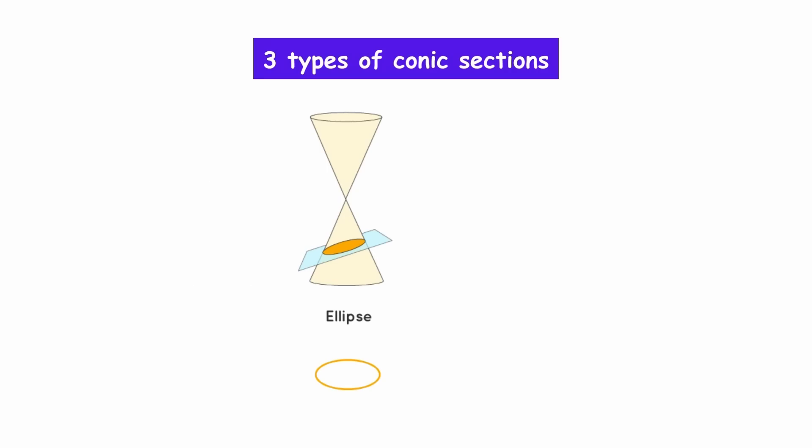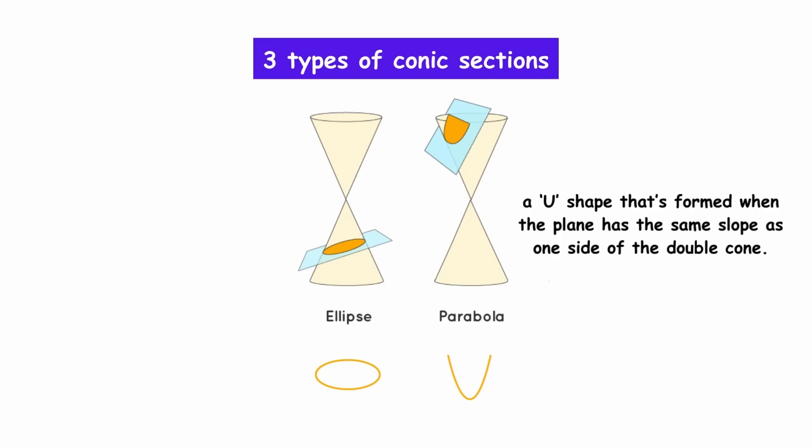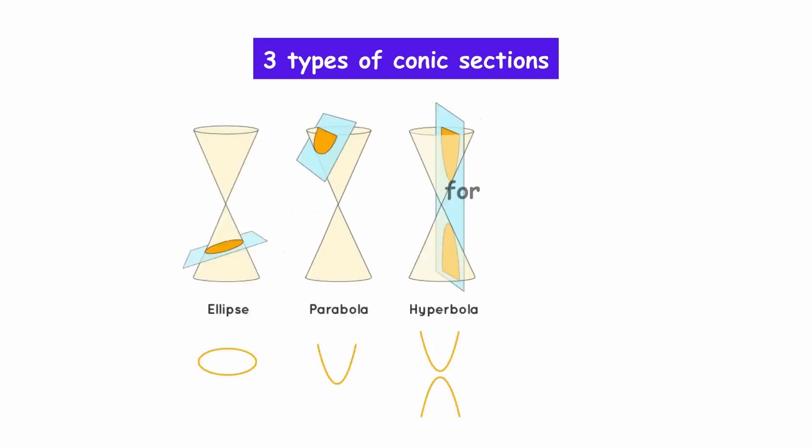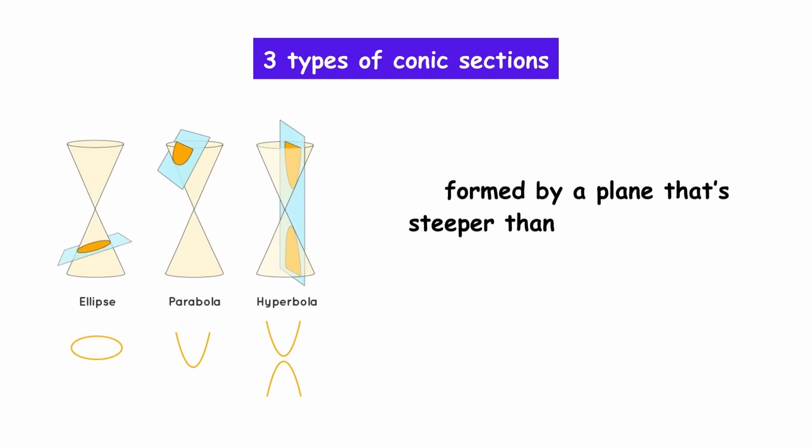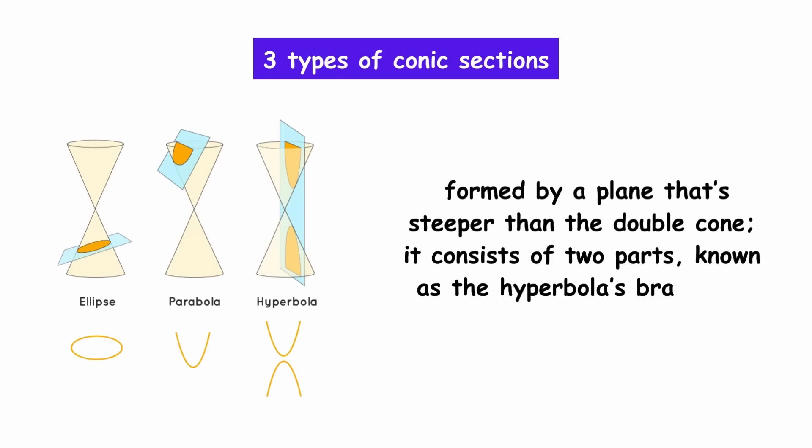The second type of conic section is the parabola, a U-shape that's formed when the plane has the same slope as one side of the double cone. The third type is the hyperbola, formed by a plane that's steeper than the double cone. It consists of two parts, known as the hyperbola's branches.